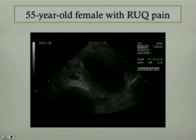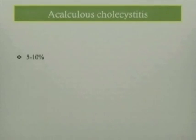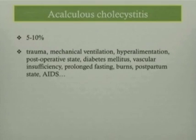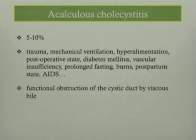Moving on to the next case in the series of cholecystitis — a 55-year-old female with right upper quadrant pain. This single sonographic picture demonstrates an inflamed gallbladder with a very thick gallbladder wall and some pericholecystic fluid. However, what is lacking here is the presence of gallstones, so the diagnosis is acalculous cholecystitis. This accounts for only 5 to 10 percent of cases of acute cholecystitis. Predisposing risk factors include trauma, mechanical ventilation, and hyperalimentation. The patient is usually very sick, and the cause is usually related to functional obstruction of the cystic duct by viscous bile.